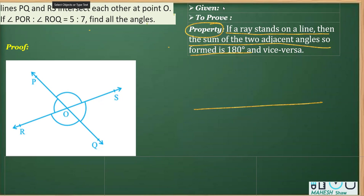That means if this is a given line and there is a ray that stands, then sum of these two angles should be 180 degrees, provided this ABC is a given line. So let's see what the question says here.